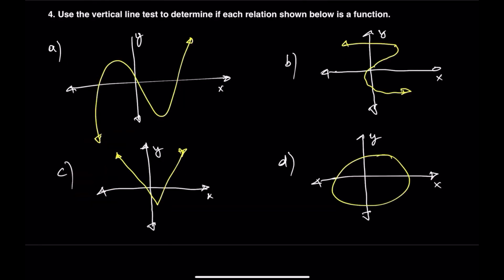Let's start by analyzing the first graph. If you draw a vertical line anywhere on it, you'll see that the line only touches the graph at one point. That means the relation passes the vertical line test. So yes, it is a function.